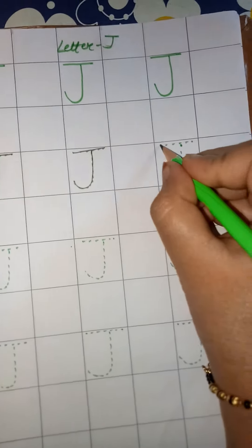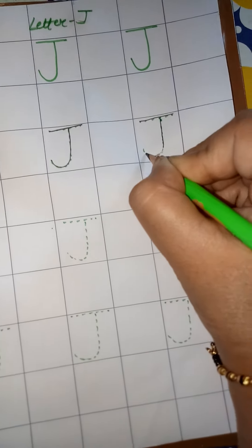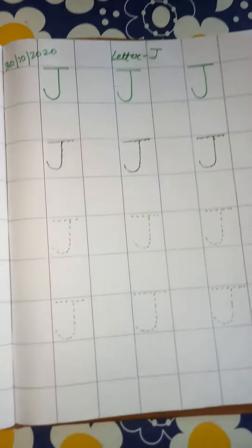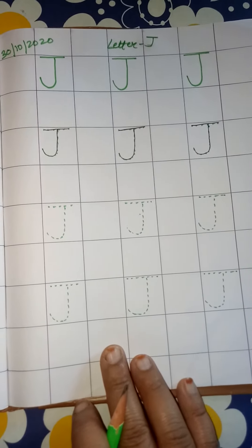This way you will trace the dots on the whole page, on top of the dots for letter J.